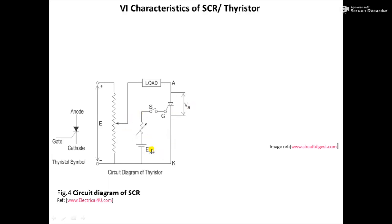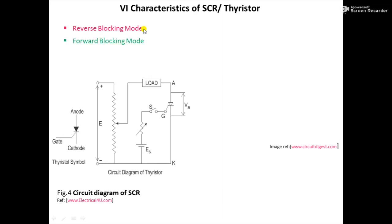Using this circuit diagram we are going to study the VI characteristics of SCR — that is, the behavior of the SCR under certain conditions. The characteristics are defined in three modes of operation: the first mode is reverse blocking mode, the second is forward blocking mode, and the third is forward conduction mode. In the first two modes the SCR is off, and in the third mode the SCR can be turned on.